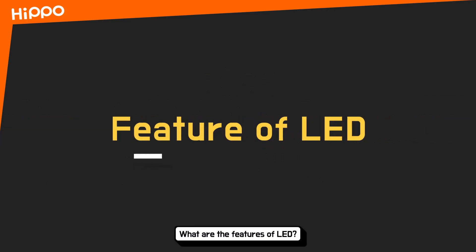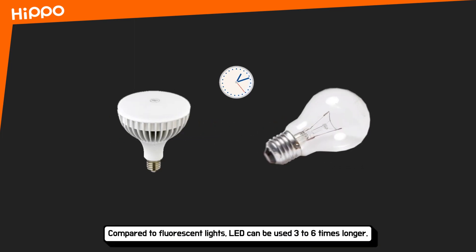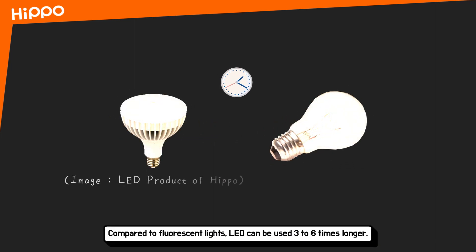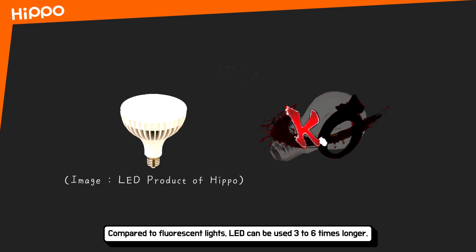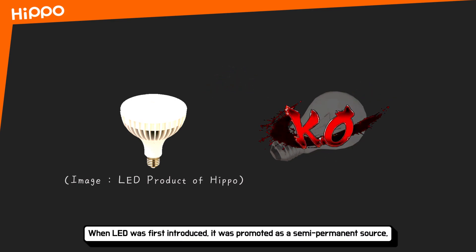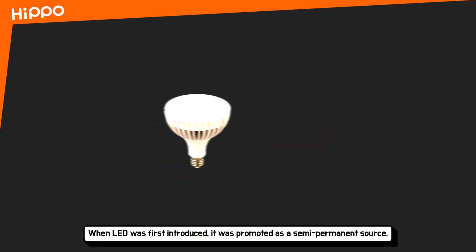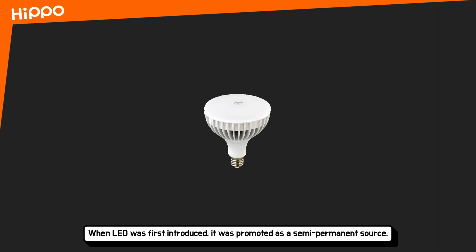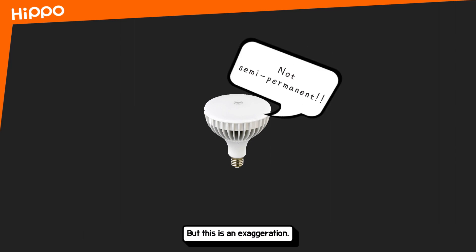What are the features of LED? Compared to fluorescent light, LED can be used approximately 3 to 6 times longer. When LED was first introduced, it was promoted as a semi-permanent source.